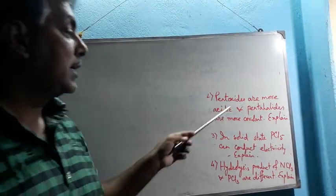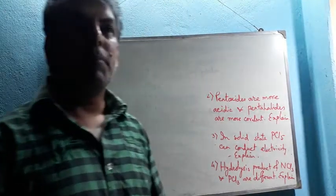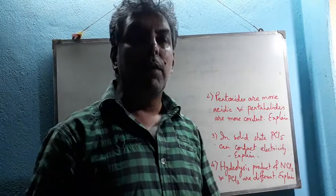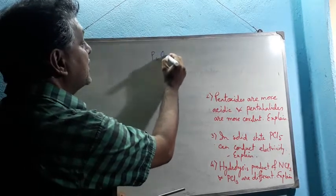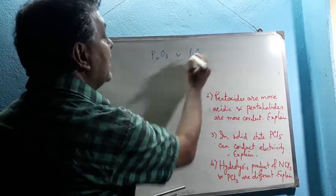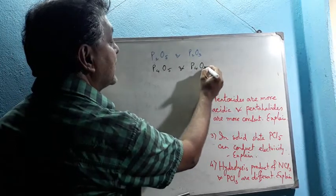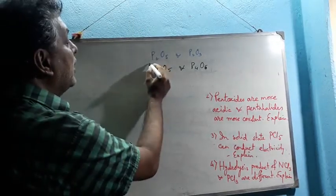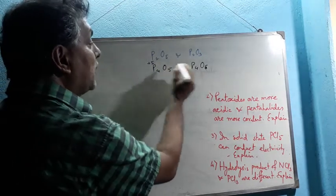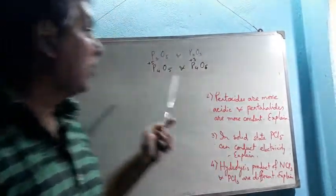Question two: pentoxides are more acidic and pentahalides are more covalent — explain. Note that nitrogen cannot form pentoxide due to unavailability of d-orbitals in its valence shell. Comparing P2O5 and P2O3 (which exist as dimers P4O10 and P4O6), the oxidation number of phosphorus in P4O10 is +5 and in P4O6 is +3.